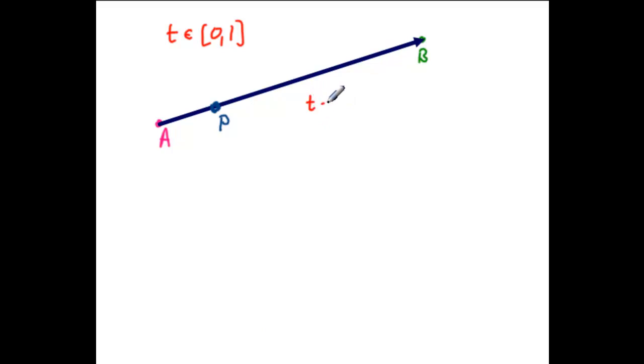So T equal to zero, we want P to be A. At T equal to one-half, we want P to be the midpoint of AB.